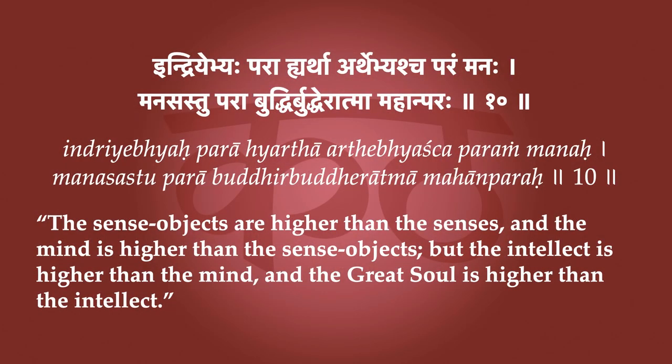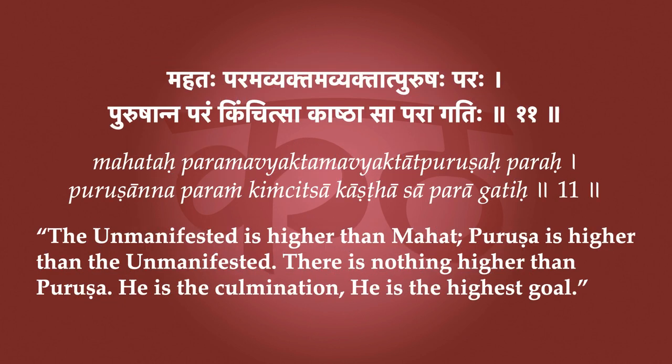Verse 10: The sense objects are higher than the senses, and the mind is higher than the sense objects, but the intellect is higher than the mind, and the great soul is higher than the intellect. Verse 11: The unmanifested is higher than Mahat. Purusha is higher than the unmanifested. There is nothing higher than Purusha. He is the culmination. He is the highest goal.